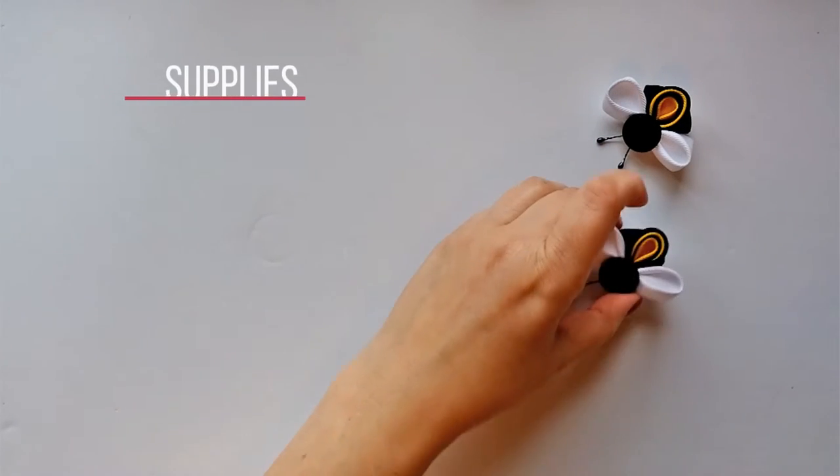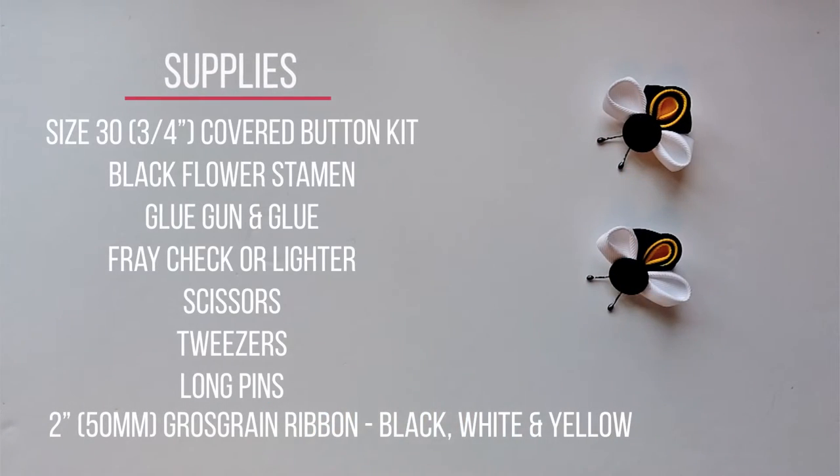Hello everyone, for this tutorial you're going to need 2 inch or 50 millimeter grass grain ribbon in black, white, and yellow, a size 30 or 3 quarter inch covered button kit, a black flower stamen with two heads, and a hot glue gun and some glue.